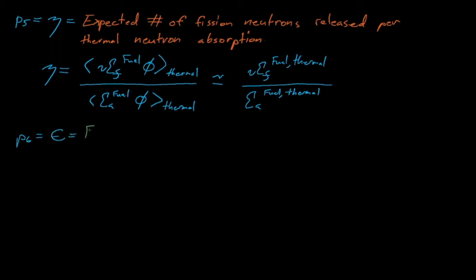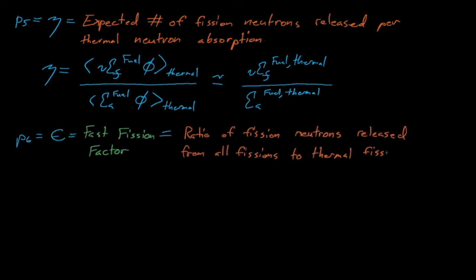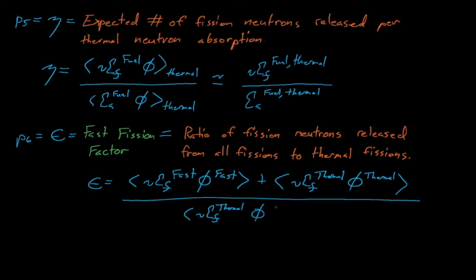Lastly, P6 is known as the fast fission factor and is described by this inner product ratio here, which is simply the ratio of fission neutrons released from all fissions to the number of fission neutrons released from thermal neutron induced fission only.